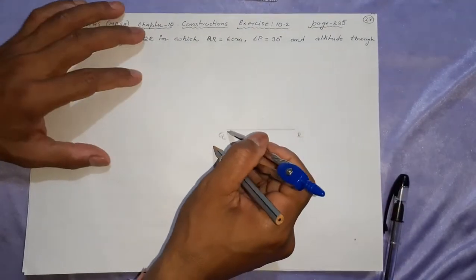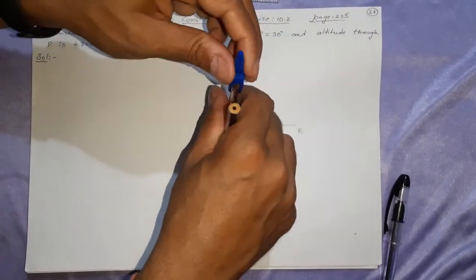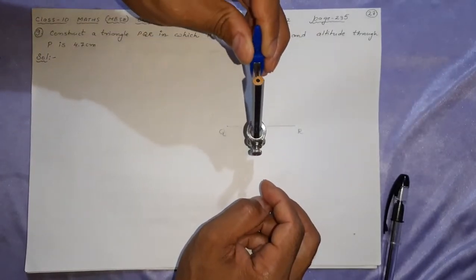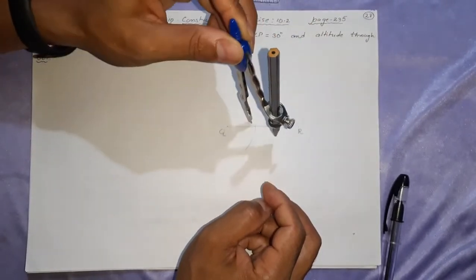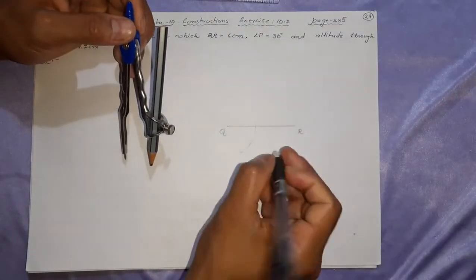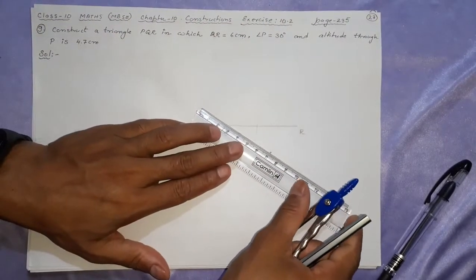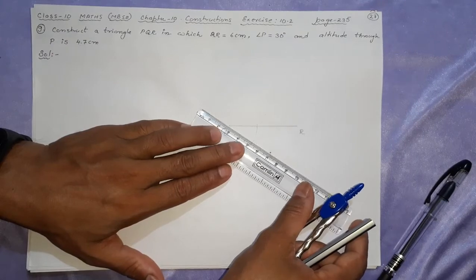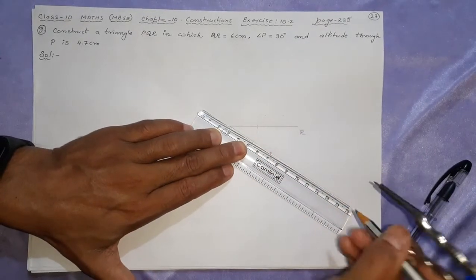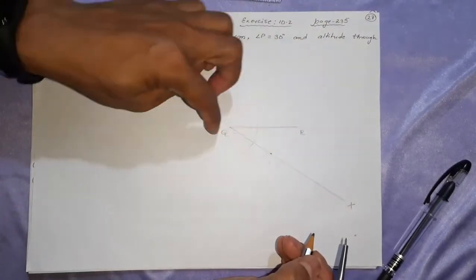What is the next step? Making a 30 degree angle below the triangle, below this line. Just like CBX, here it will be RQX. I have made the 60 degree and then divided it into half to get 30 degree. We call it X here. Just like CBX, now RQX.